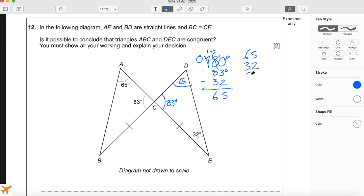I'll do a double check by adding these up: 65, 32, 83. That's 5 plus 5 is 10, carry the 1, 6 plus 3 is 9, plus 8 is 17, add the 1 is 18. So 180 degrees. That is 65 degrees.